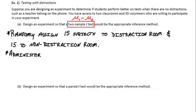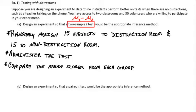And then, of course, you've got to administer the test. Same test to both groups. And at the end, you compare the mean scores from each group, whether they were in the distraction group or the control group, which didn't have any distractions.